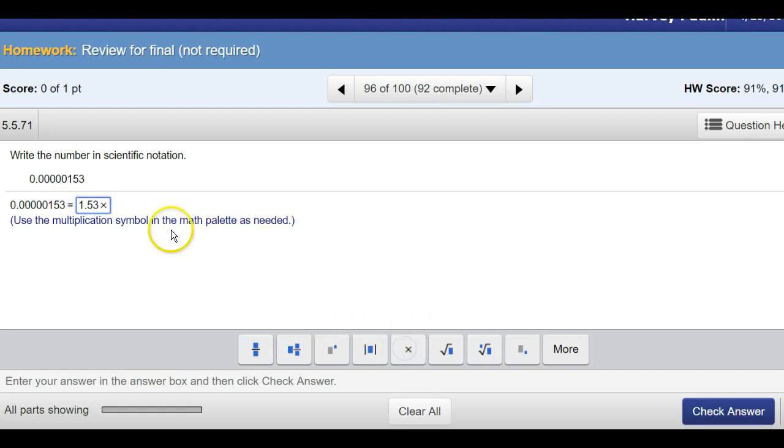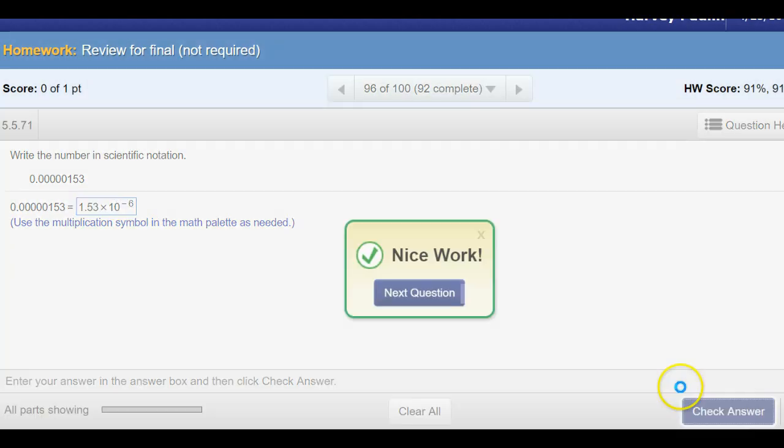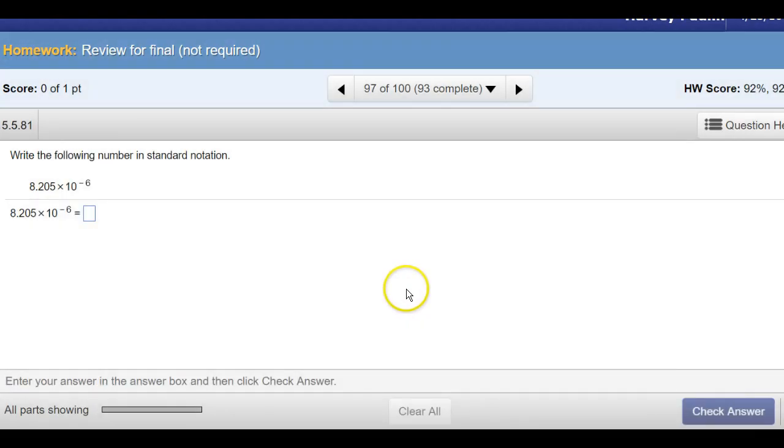So, 1.53. Now, they give us this nice little time symbol down here. Because it's not really an x. And then we put a 10. 1.53 times 10 to the negative 6. Now, this is a small number that we want to convert to standard notation. So, the strategy would be to write it out. 8.205. Now, we have to move that decimal place over. How many places? 6 places. Well, 1 is already there. So, that means we have to add 5 zeros. So, it's 1, 2, 3, 4, 5. So, that we can move our decimal place over all 6 places.